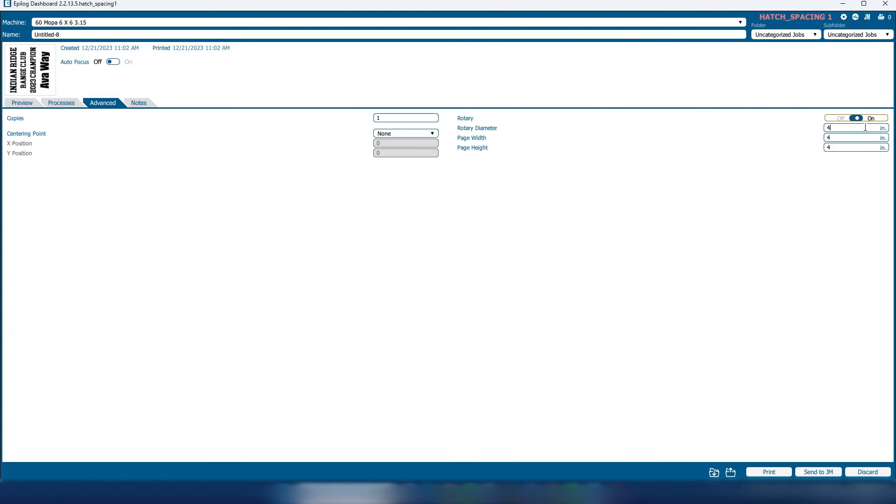I'm going to select the rotary on. Here I'm going to put in the diameter of that tumbler. This one's three inches and this page width and height that corresponds to the marking field in our Galvo system with the F Theta 163 installed. I'm also going to select a centering point. I'm going to have the top of that graphic. Actually, I'm going to select center center.